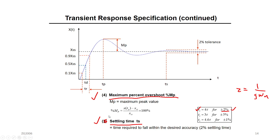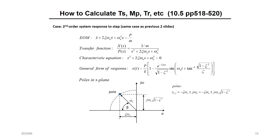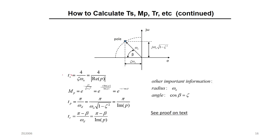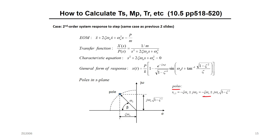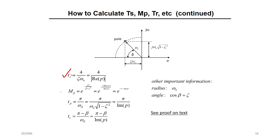You can measure these two values if you have the transient response from an experiment. Or, if you know your model, just find the roots of the characteristic equation — we call them poles. For an underdamped system, the settling time is 4 over zeta*omega_n, which equals 4 over the magnitude of the real part of your root. The maximum overshoot is e to the power of minus pi times the real part divided by the imaginary part. These are the two most important formulas — you don't have to memorize them, but you need to understand them.